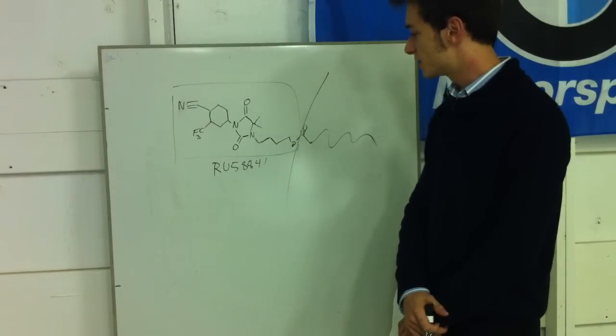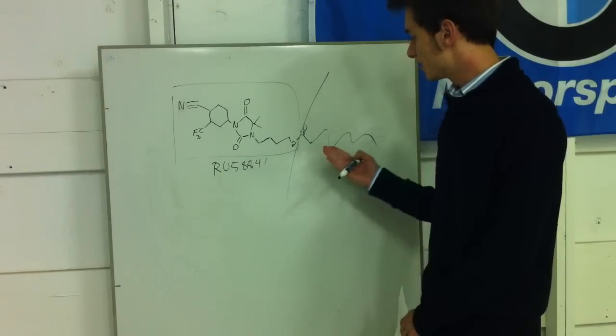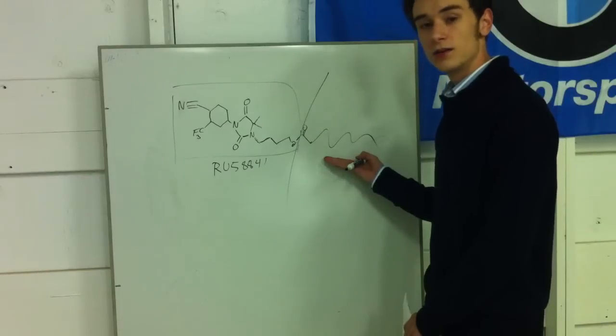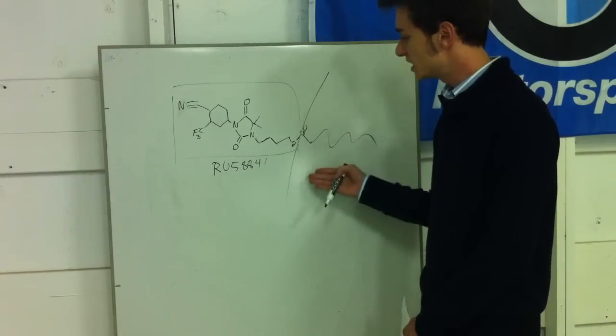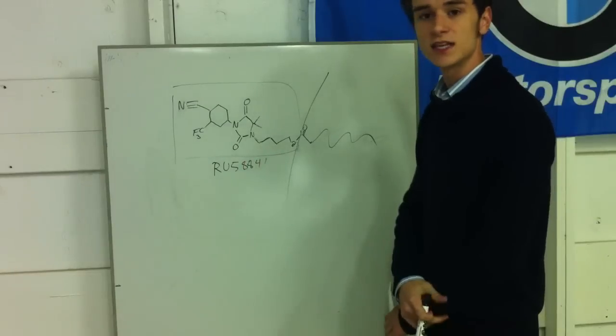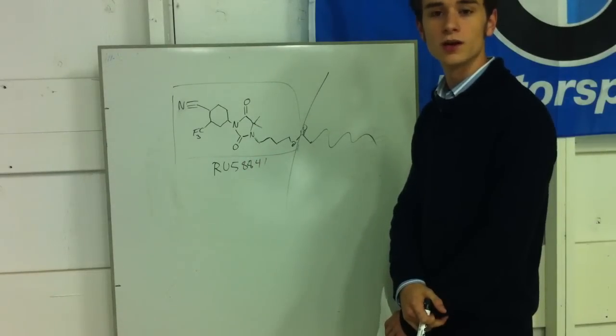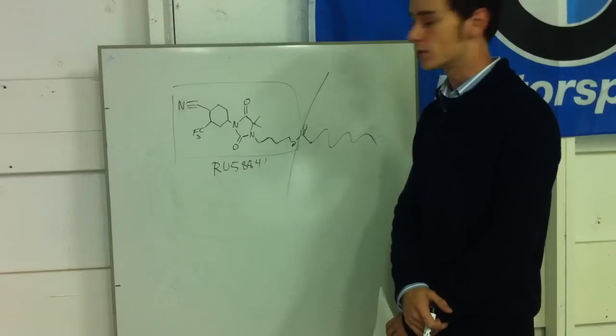So you see now that we can target the cells, get the drug into the cells, have it cleaved, and put back into the active state of RU58841, where it can go and block the androgen receptor.